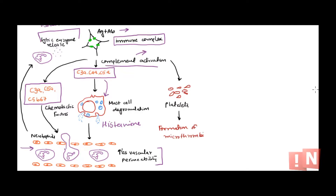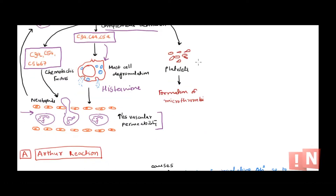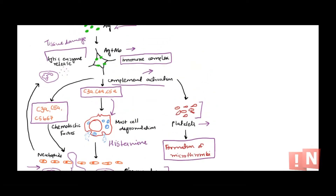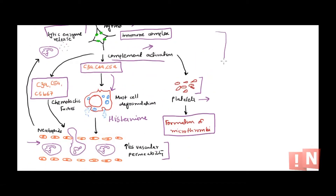Along with complement activation, complement split products can also trigger platelet aggregation at the site of deposition. This results in the release of clotting factors, leading to the formation of microthrombi — so clots form at that particular site. This is also one of the damaging outcomes of type 3 hypersensitivity.